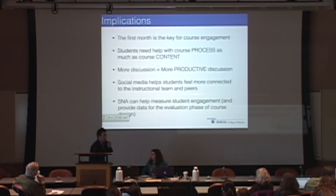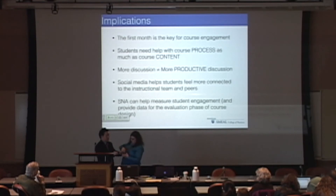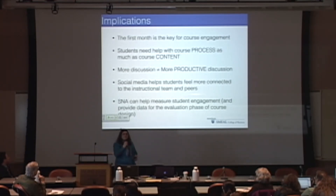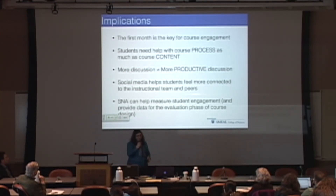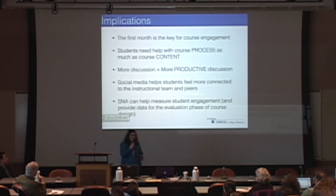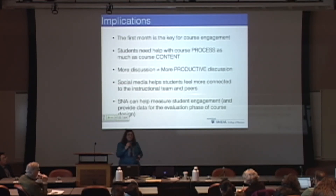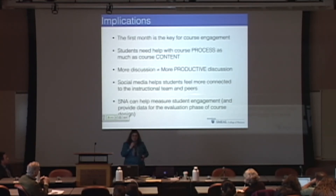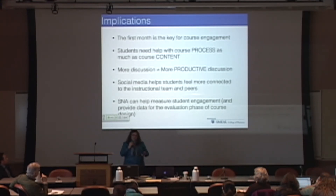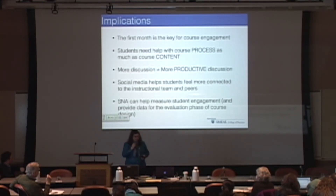Now for the implications - I'll give the mic back to Rene. Even though only about 148 students were actively engaged in the network, it was almost 800 students who were logged into Yammer. So there was a lot of quiet presence as well. From this we learned a few different things: the first month is key for course engagement, and students needed help with the course process in this design especially, because they're not used to being given this much autonomy in any of their classes. It takes a long time to get them to believe the instructors really mean it - that they have the choice to engage in these things.